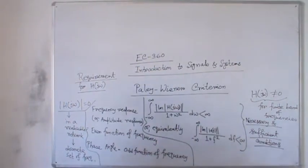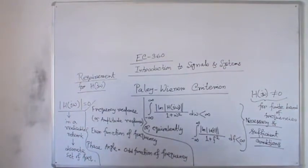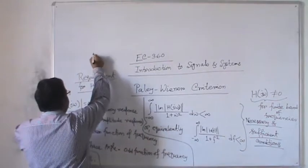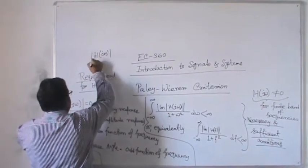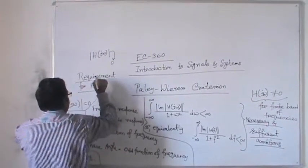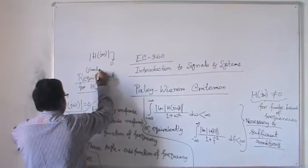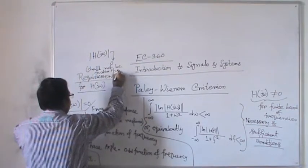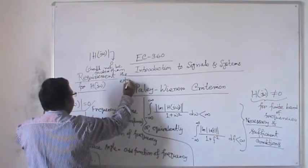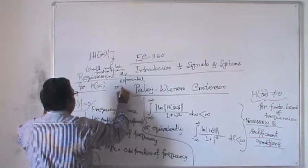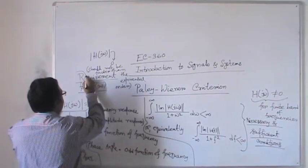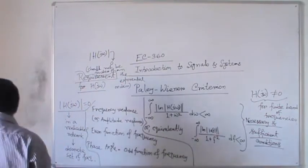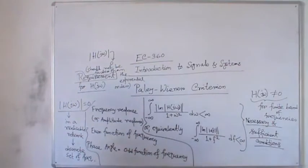The second condition, according to the Paley-Wiener criterion, is that the amplitude function — that means |H(jω)| — must not fall to zero faster than the exponential order. This value should not tend towards zero faster than the exponential order.